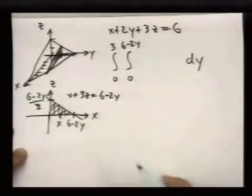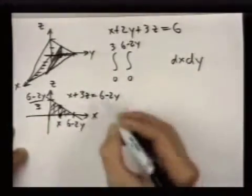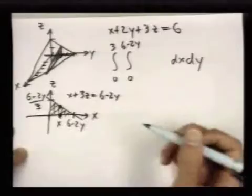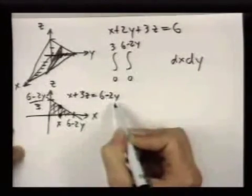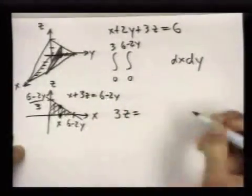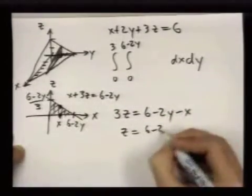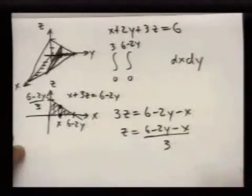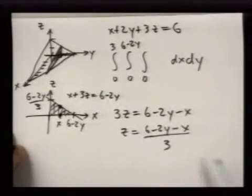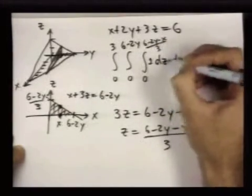And then for any given x value, the z values go from 0 to the point on the line. So the point on the line is the value of z on this line. So again, now we've chosen x and we've chosen y, and we're seeing what z value we have on that line. So it's the same process where I solve for z. So z is that, and so this inner integral goes from 0 to this value of z. And that's integral of 1 dz.